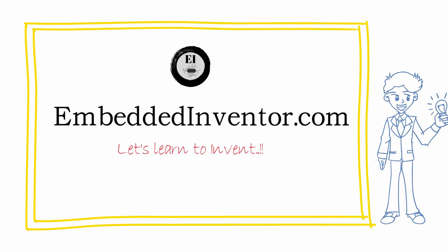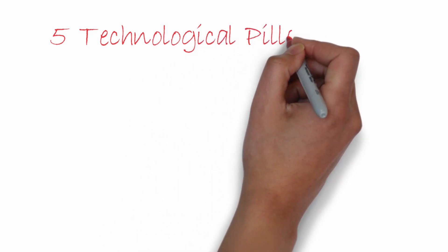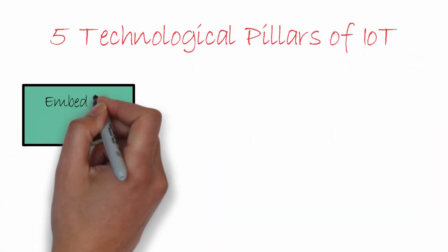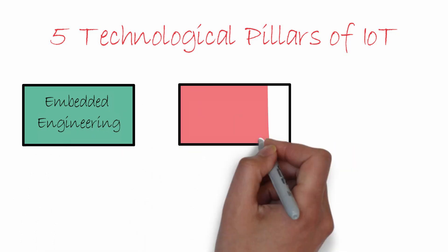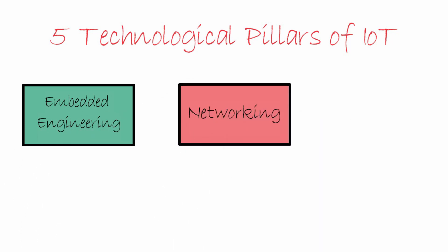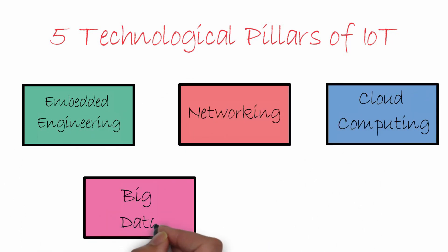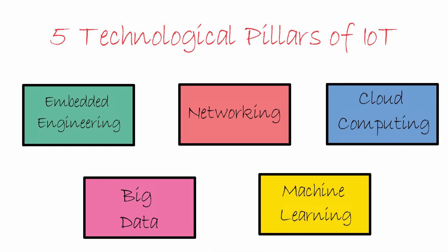The five main technologies that are crucial to IoT include embedded engineering, networking, cloud computing, big data, and machine learning. Let's briefly have a look at each one.